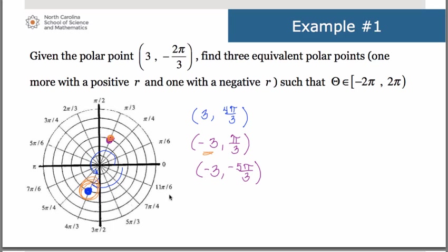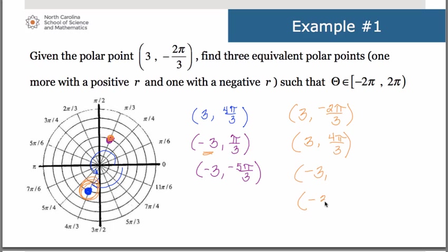Now doing this algebraically: starting with (3, -2π/3), we keep the same r and add or subtract 2π. We can't subtract 2π because that would go below negative 2π, so we add 2π — using common denominators, that's adding 6π/3, giving us 4π/3. Next, we negate r and go back to the original angle, adding π gives us π/3, and subtracting π — that's subtracting 3π/3 — gives us negative 5π/3. Either the graphical or algebraic method is acceptable; use whichever you feel more comfortable with.